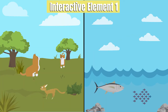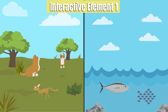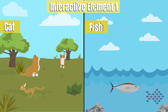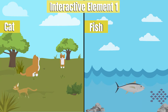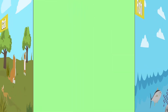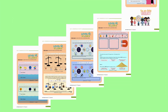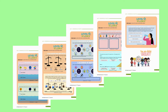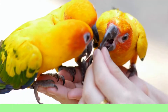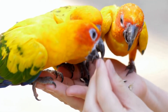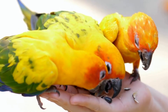Interactive element 1: Think of an animal you know, like a cat or a fish. What structures does it have that help it survive? Write down your observations in your LVL Up workbook and consider how each part of its body serves a specific function. This exercise will help you see the connection between structure and survival.